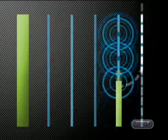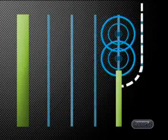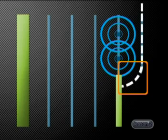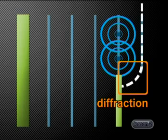Now let's use Huygens' Principle to predict what a wave front will look like for a wave that moves past a barrier. Do you notice here that some of the points on the wave front are blocked by the barrier? This causes the shape of the new wave front to be curved at the point where the barrier has cut off some of the point sources. The curvature of the wave front as it passes a barrier is called diffraction.